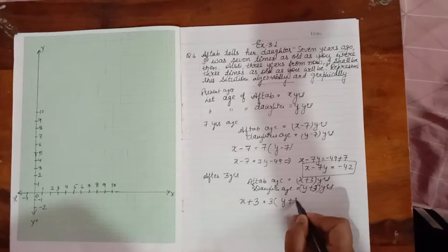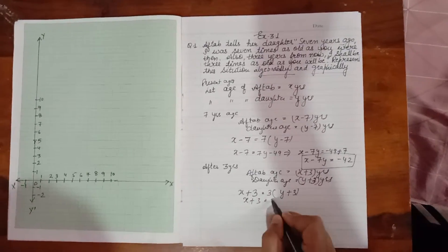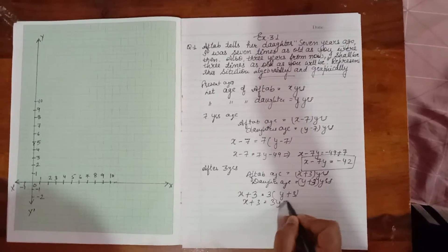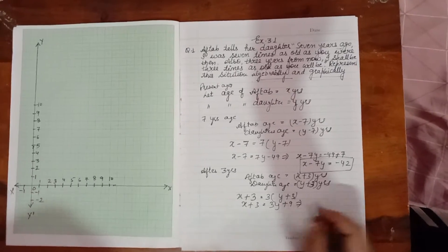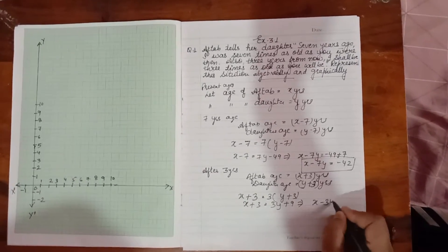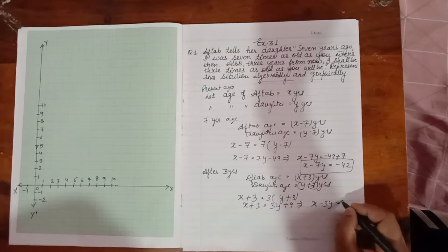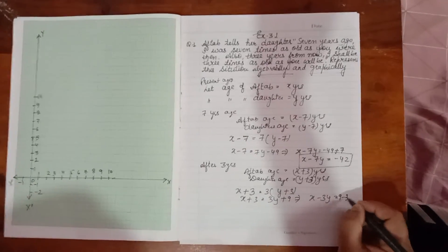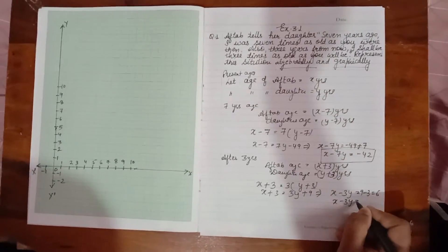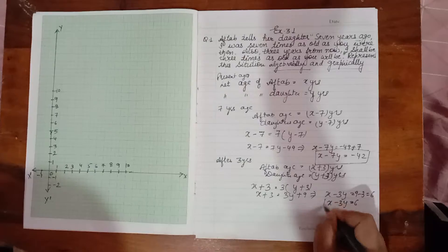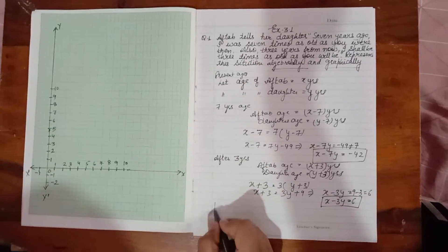So three into y plus three. Solving: x plus three equals three y plus nine, which gives x minus three y equals nine minus three, that is x minus three y equals six. This is the second equation.